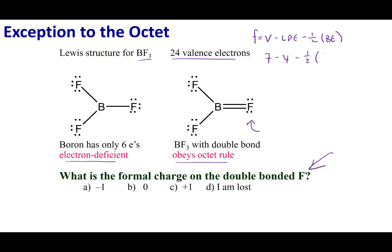Fluorine has a valence of seven. If I look at the lone pair electrons, I have four. One half the bonding electrons is two. If I do this calculation out, I get plus one. This is a little disconcerting—I have a plus one formal charge on the most electronegative atom on the periodic table.